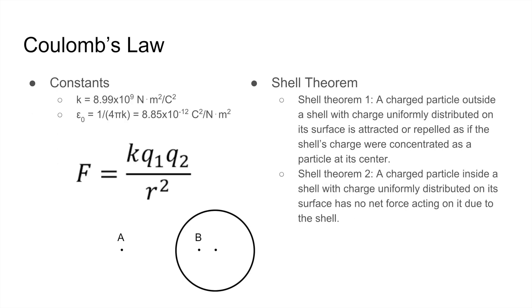Now the only formula that you need to know for this chapter is Coulomb's Law. And to know that, you need to know a couple of constants. The first constant that you want to know is k, which is given by 8.99 times 10 to the 9 newtons times meters squared over coulomb's squared.